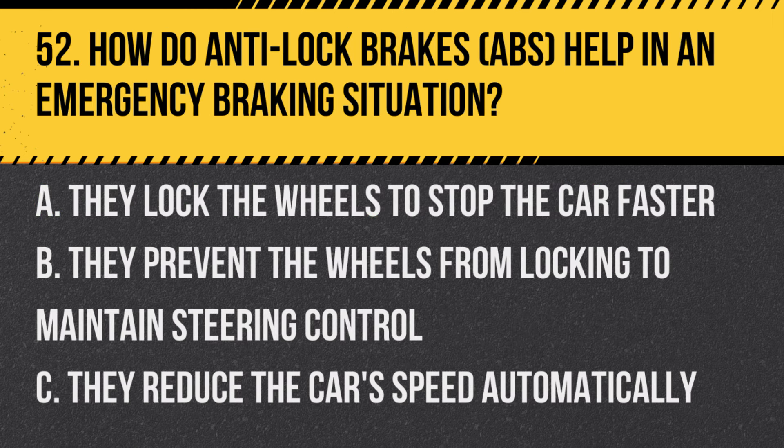Question 52: How do anti-lock brakes (ABS) help in an emergency braking situation? A. They lock the wheels to stop the car faster. B. They prevent the wheels from locking to maintain steering control. C. They reduce the car's speed automatically. Answer: B. They prevent the wheels from locking to maintain steering control. ABS helps you maintain steering control during an emergency stop by preventing the wheels from locking.